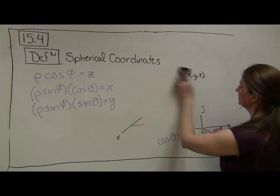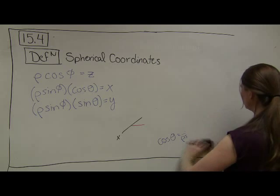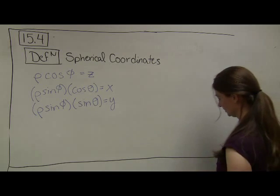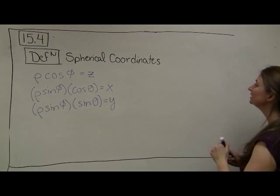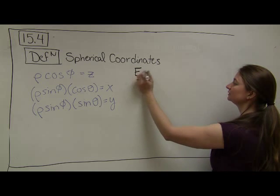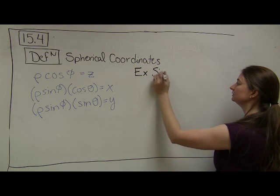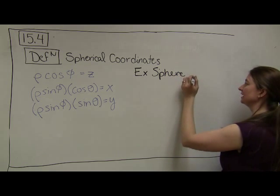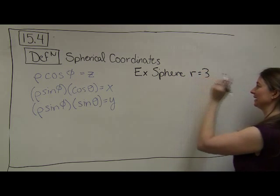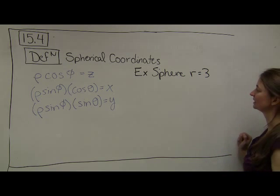So let's go ahead and see an example of a function and see why this is called spherical coordinates. Let's say that I have a sphere, and the sphere has radius 3. We're just going to go back to similar to our cylinder example.